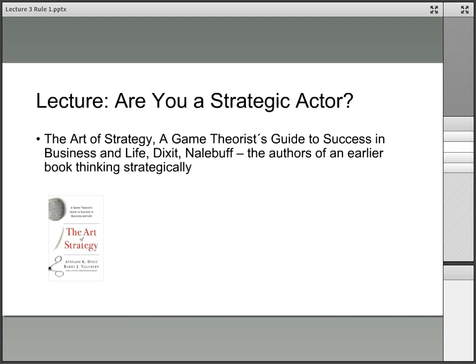In other words, how we are dependent on each other and how to solve these interdependency dilemmas. These five rules have been taken from a book written by Nalebuff and Dixit, titled The Art of Strategy, A Game Theorist's Guide to Success in Business and Life.